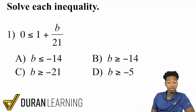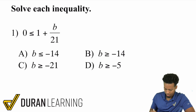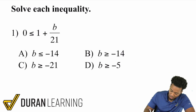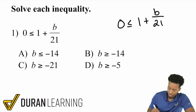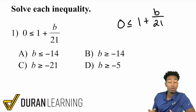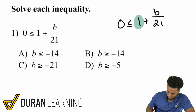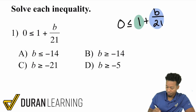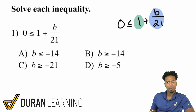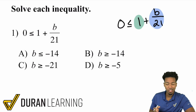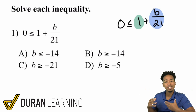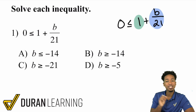We have 0 is less than or equal to 1 plus B over 21. Let's solve this. Now, we have this 1 just sitting there by itself, and then B over 21. You might ask, should we multiply by 21 first? No. Remember, just like we went over in two-step equations, two-step inequalities use the same process to solve — you just follow a slightly different set of rules.